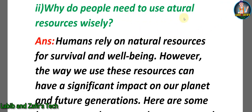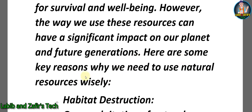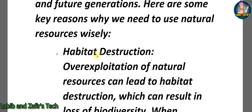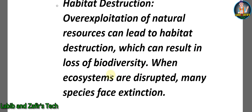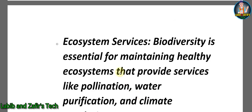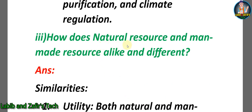Second descriptive question: Why do people need to use natural resources wisely? Answer: Humans rely on natural resources for survival and well-being. Key reasons include: first, habitat destruction — over-exploitation of natural resources can lead to habitat destruction, resulting in loss of biodiversity, and many species face extinction when ecosystems are disrupted. Second, ecosystem services — biodiversity is essential for maintaining healthy ecosystems that provide services like pollination, water purification, and climate regulation.